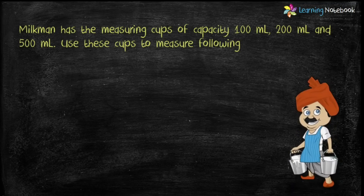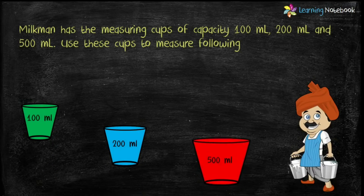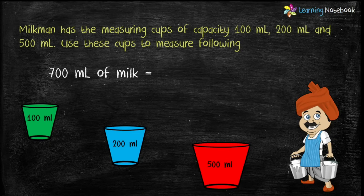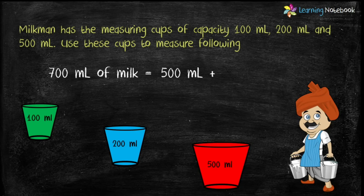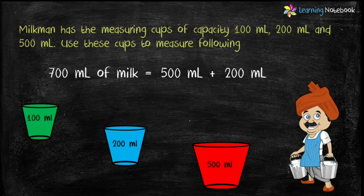The second question: a milkman has measuring cups of capacity 100 ml, 200 ml, and 500 ml. Use these cups to measure the following. First, 700 milliliter of milk. We first take the 500 ml cup, and since 700 minus 500 is 200, we then take the 200 ml cup. So the milkman uses cups of 500 ml and 200 ml to measure 700 ml of milk.